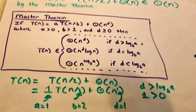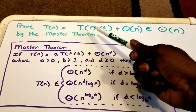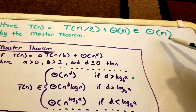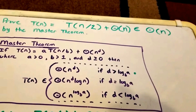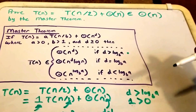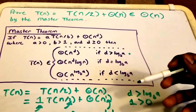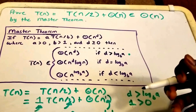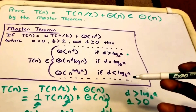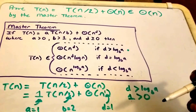We've proven that T(n) = T(n/2) + Θ(n) belongs to Θ(n) using the master theorem. Thanks for watching — please leave any questions in the comments, leave likes, subscribe, share the video, and I'll put more examples in the description link below.